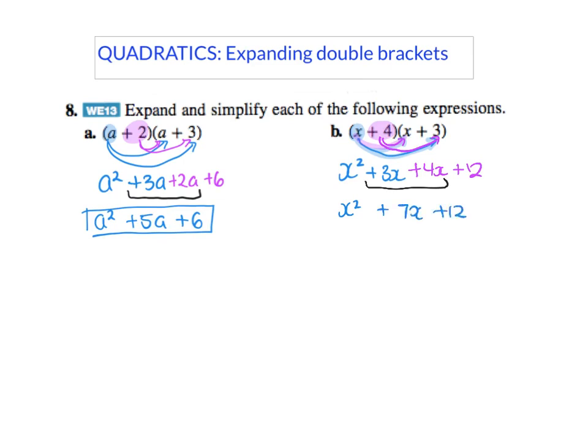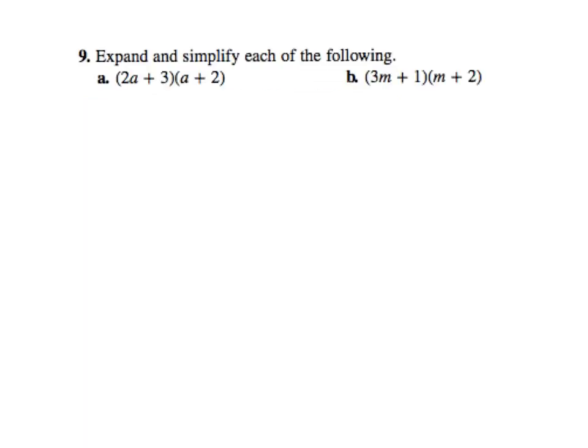Now I'm going to do four times x which is four x, and then four times three which is twelve. So if we do it like this we've got our like terms in the middle, so I can just tidy that up and say x squared plus seven x plus twelve. All right, so I'm going to go on to the next one. We're going to expand now, we've got a bit bigger numbers and it doesn't matter. The first thing I'm going to do is two a times a which is two a squared, and then two a times two which would be four a, then I'll do three times a which is three a, and then three times two which is six. These are the like terms so I've got seven a in the middle plus six, and there's our answer.